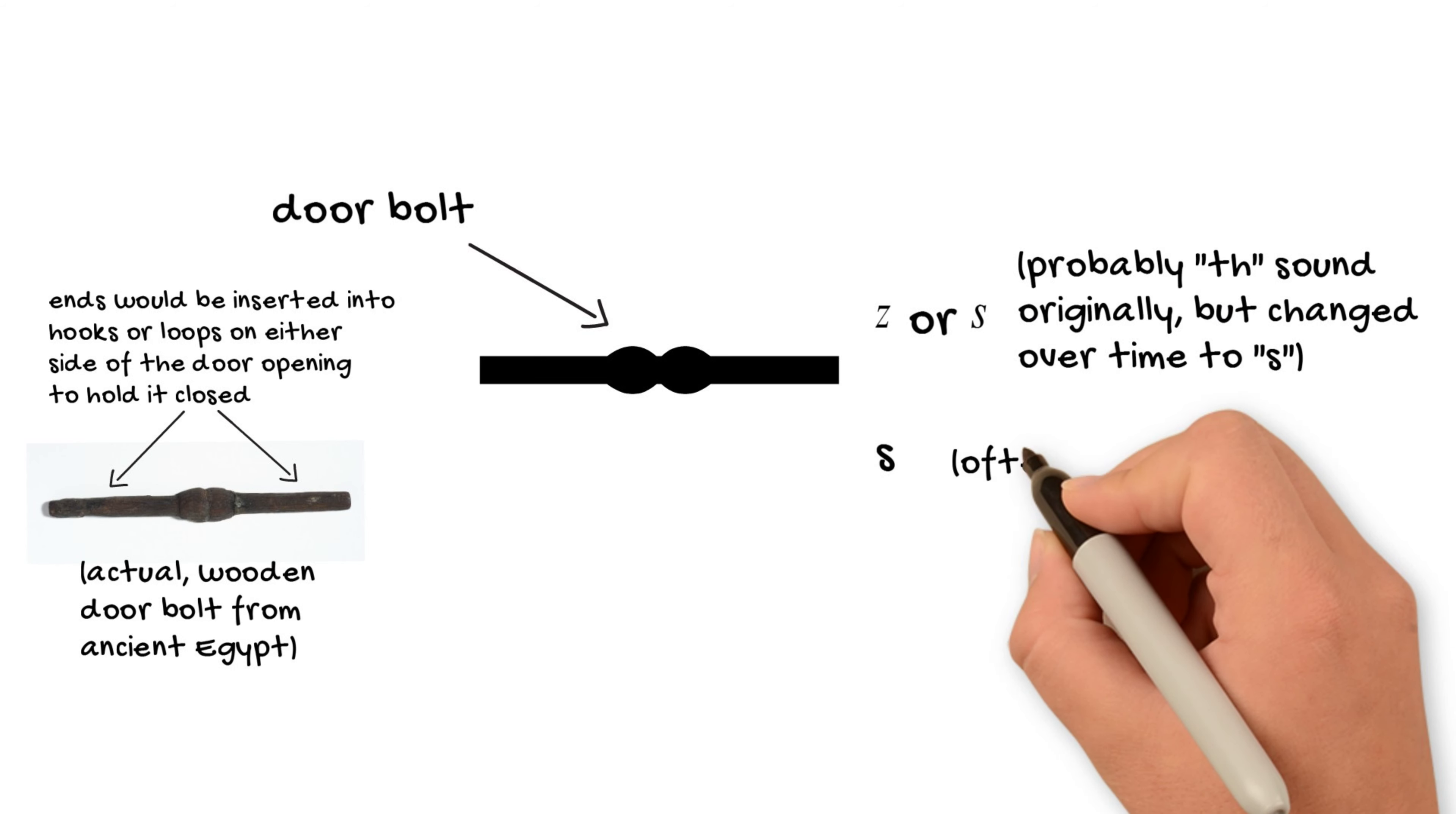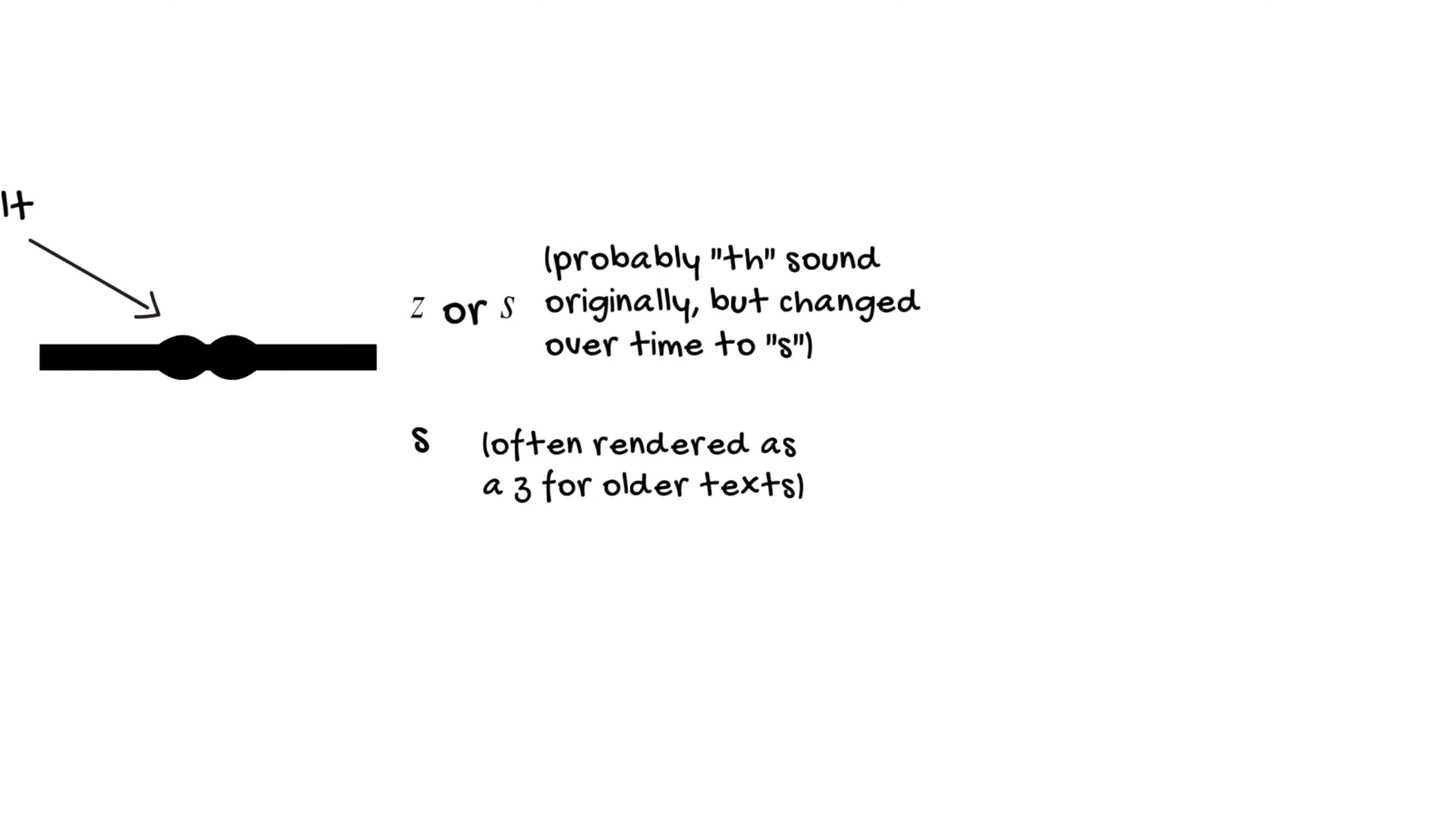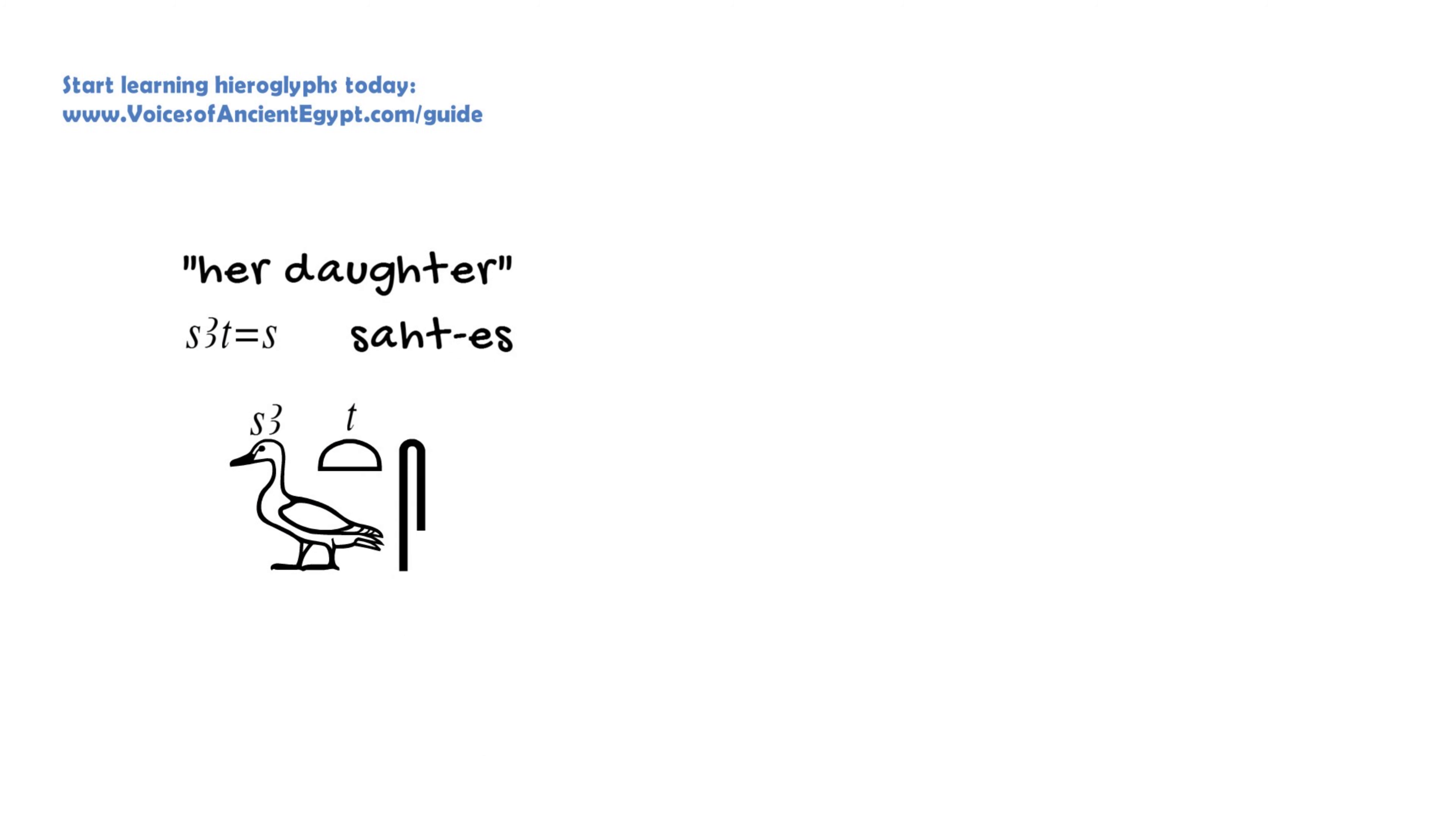And so oftentimes from Middle Egyptian and later, it is used interchangeably with that folded cloth. So I mentioned in the previous video about the folded cloth, the suffix pronoun S, for example, that can also be done with a door bolt.